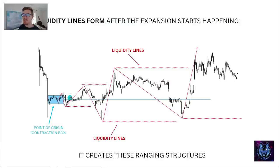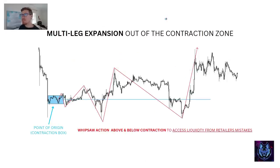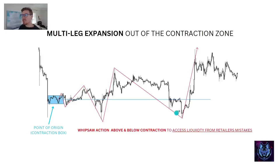The further away price moves from this point of origin, the bigger this whipsaw action gets — almost as if it expands outwards and creates these ranging structures. These are multi-leg expansions out of the contraction zone. What happens is price breaks above, the retailer thinks it's going long, they enter a long position and then it drops down — it liquidates them. Then they think it's going down, they enter a short position and then price goes up — liquidates them.